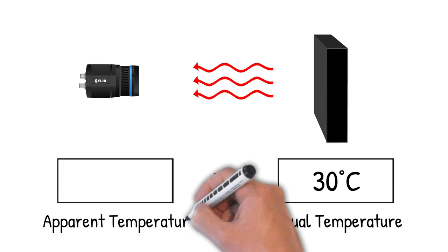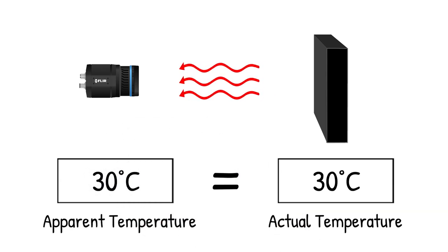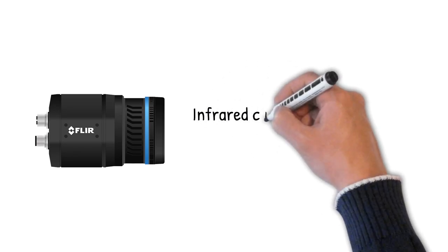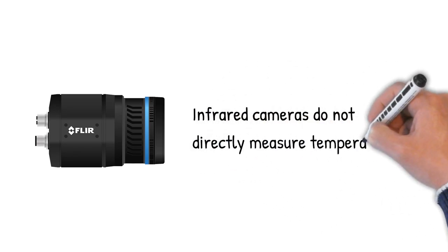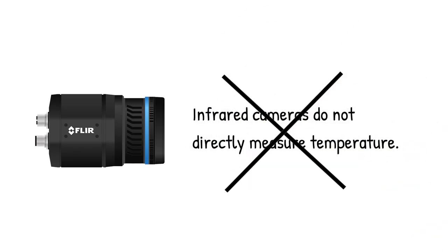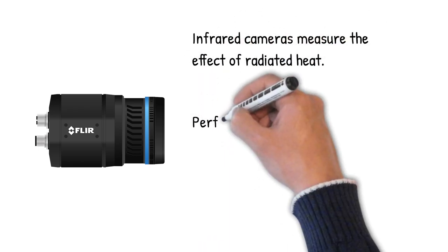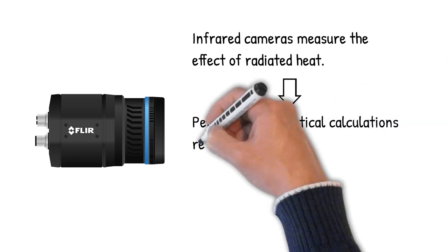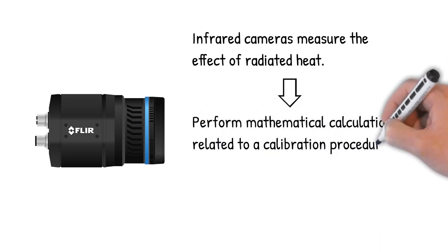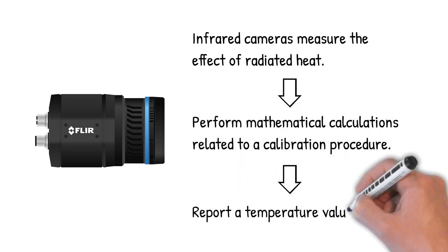The apparent temperature is the temperature value reported by our infrared camera. Infrared cameras do not directly measure temperature. Infrared cameras measure the effect of radiated heat, perform mathematical calculations related to a calibration procedure, and then report a temperature value.